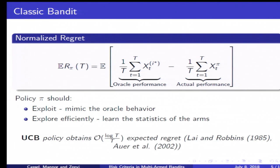To achieve this optimal trade-off, an example policy is the UCB policy which achieves an order of log T over T normalized regret, and this is optimal asymptotically. This is essentially what we need to know for the stochastic bandit.